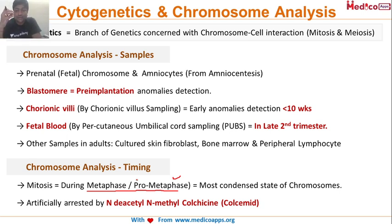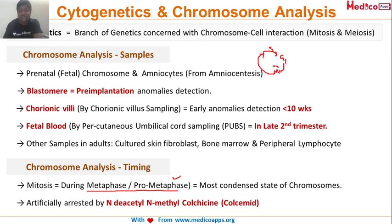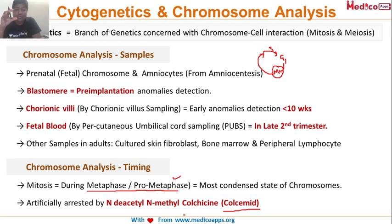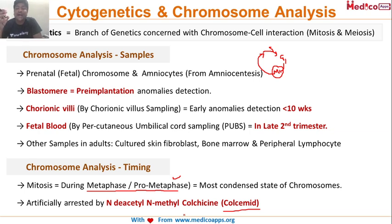To perform chromosomal analysis at metaphase, the dividing cell must be stopped in that phase. Dividing cells go through various phases — G1, S, G2, M. To arrest the cell in pro-metaphase or metaphase, we use a specific chemical called colcemid — N-deacetyl-N-methylcolchicine. This arrests the dividing cell in the metaphase state.